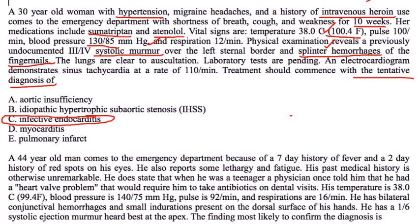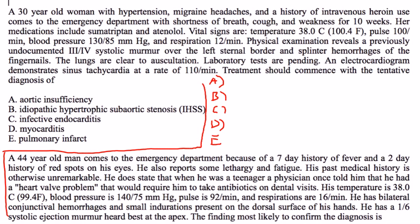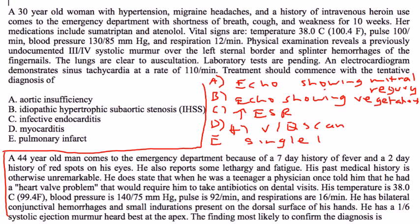And finally, the answer choices for the third vignette are: A — an echocardiogram showing mitral regurgitation; B — an echo showing vegetations; C — an elevated erythrocyte sedimentation rate; D — a positive VQ scan; and E — a single positive blood culture.